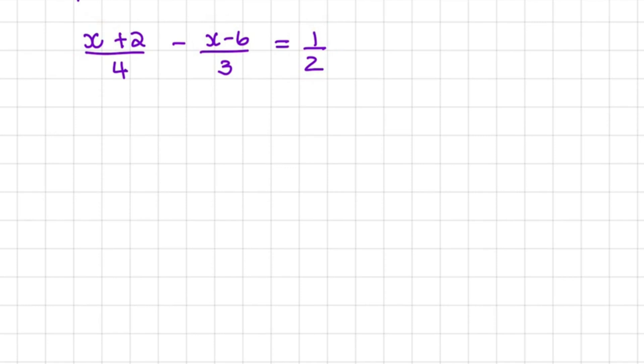The first thing that you need to do is identify the lowest common denominator. So what's the lowest number into which 4, 3, and 2 can go into? And you would know from your previous grades that 4, 3, and 2 are factors of 12.